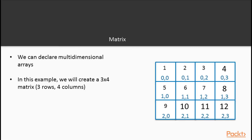Go also allows us to declare multidimensional arrays. In this illustration, we have a 3 by 4 matrix, which consists of three rows and four columns. To access the value of a given element in the matrix, we specify two index numbers — the row number and the column number. For example, the value 7 is at index 1, 2 of the matrix. We're going to look at a code example where we implement this multidimensional array.